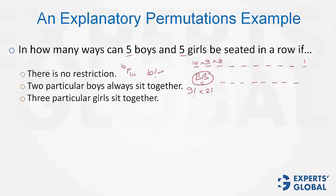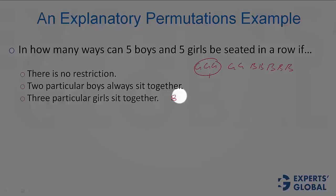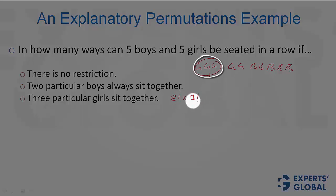Case 3: 3 particular girls always sit together. These 3 become 1 entity, and then there are 7 other entities — 2 girls and 5 boys. In all, we have 8 entities: 1 trio and 7 singles. These can be arranged in 8 factorial ways. Then these 3 particular girls can be shuffled in 3 factorial ways. The answer is 8 factorial times 3 factorial.